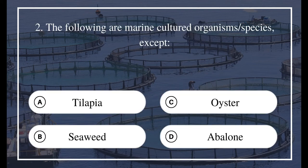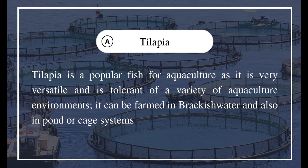Question 2: The following are marine cultured organism species except: a) Tilapia, b) Seaweed, c) Oyster, d) Abalone. The answer is A, tilapia. Tilapia is a popular fish for aquaculture as it is very versatile and tolerant of a variety of aquaculture environments. It can be farmed in brackish water and also in pond or cage systems.